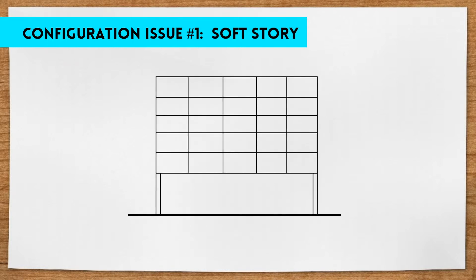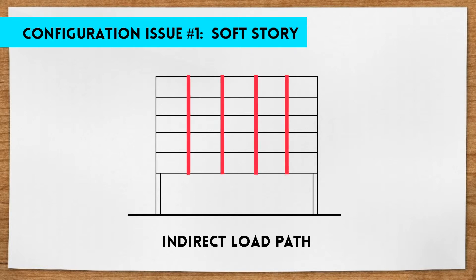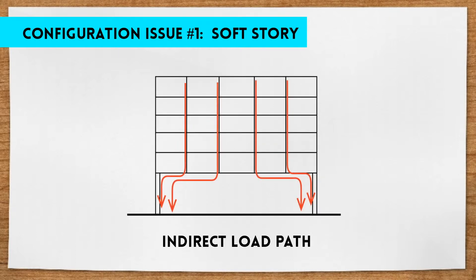The second type of soft story is the indirect load path. This occurs when vertical framing elements from upper floors stop short at the second floor rather than continuing down through the ground floor and into the foundation. The discontinuous load path creates a huge concentration of pressure on the few structural elements on the ground floor.